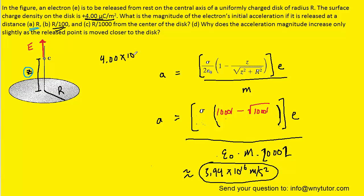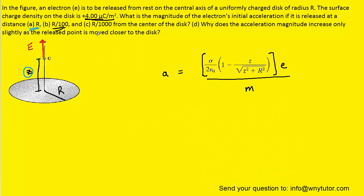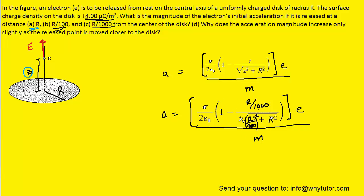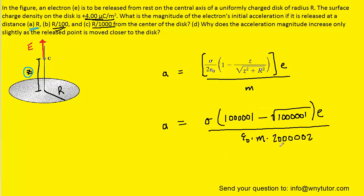For part C, the distance from the electron to the center of the disk is R divided by 1,000 — again that's Z. We substitute R over 1,000 in for both Z's and go through the same algebra as part B. The simplified expression is basically the same as part B but with an extra zero in the large-number terms. Plugging in the constants gives 3.97 times 10 to the 16 meters per second squared — the correct answer to part C.